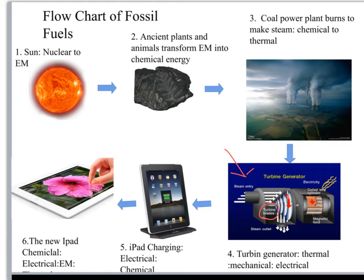The mechanical energy of the spinning turbine spins a magnet inside a coil of copper wires, and inside that magnetic field, electricity is produced. That electricity is then shipped to your house, and the electrical energy is turned into chemical energy in the form of the lithium ion battery inside the iPad. So the electricity is stored chemically, and then once you open up your iPad, it converts the chemical energy inside the battery into electromagnetic radiation.